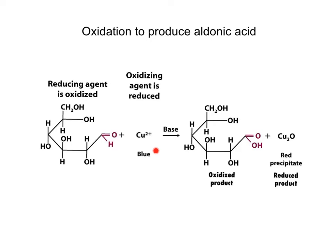Mild oxidizing reagents oxidize the aldehyde group in an aldose to form a carboxylic acid group. This is not a reaction of the cyclic hemiacetal monosaccharide, but it is a reaction of the open chain, which exists as traces during mutarotation between the alpha-anomer and the beta-anomer.